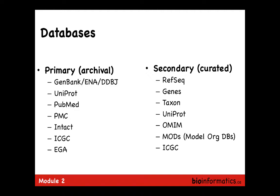Genes is another database from NCBI that has the full story on any given gene. If you look up TP53 in Genes, you'll have the transcripts, the genome, all the details, the interactions, the publications, the summary, all in one place. The Gene database becomes very useful for getting information about any given gene, especially human genes, because NCBI does all organisms but does human stuff quite well.